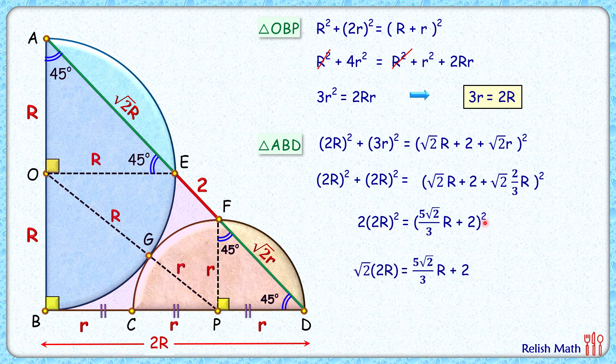Now taking square root on both sides, the left side will be √2 times 2R, and on the right side the square and square root will cancel out. Taking everything with capital R on the left side, we'll get √2/3 times capital R = 2. Simplifying, we'll get capital R = 2 times 3/√2, that is 3√2 centimeters, and that's our answer.